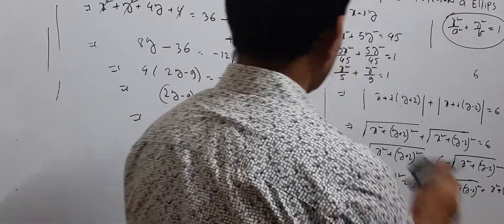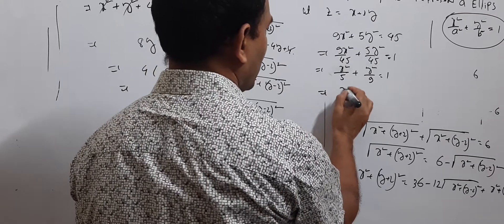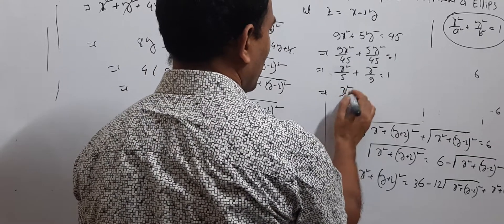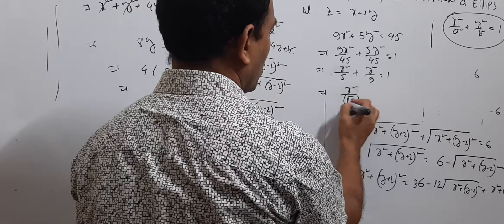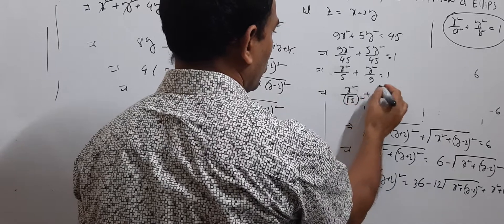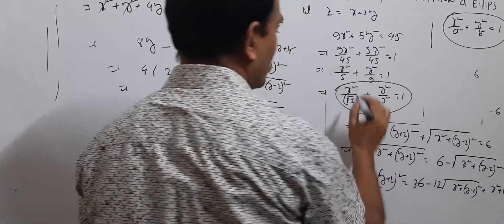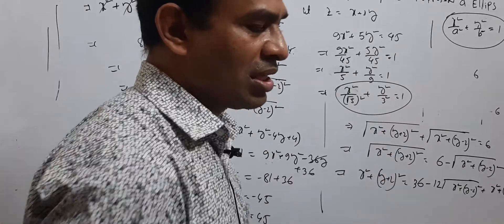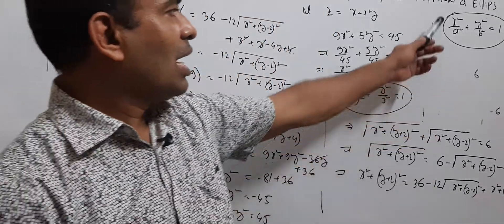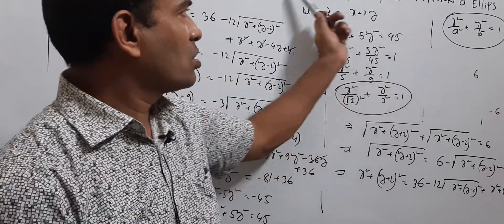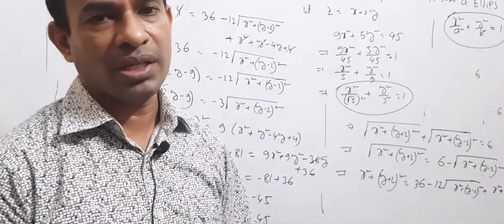Converting to standard form: x²/(√5)² + y²/3² = 1. This equation represents an ellipse, proved.